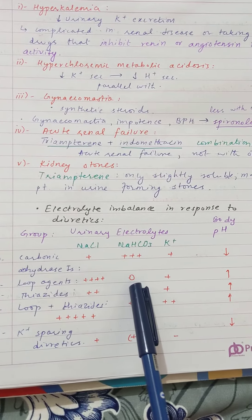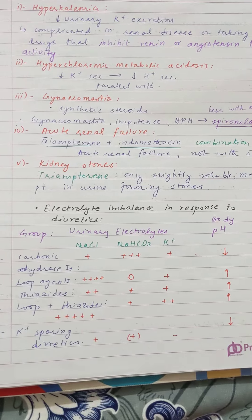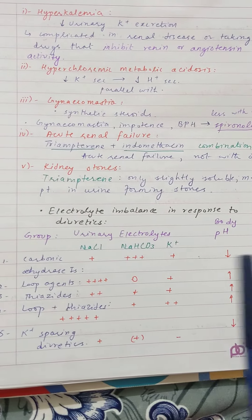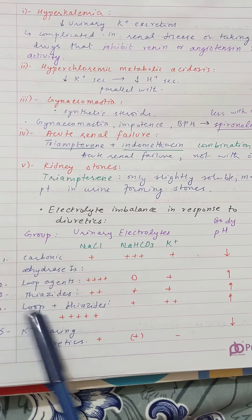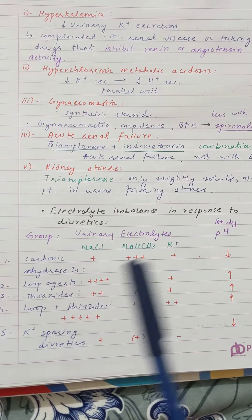In loop agents, you can see that bicarbonate excretion and potassium excretion occur. This is an important finding. When we use thiazide and loop diuretics, NaCl excretion is much more significant.